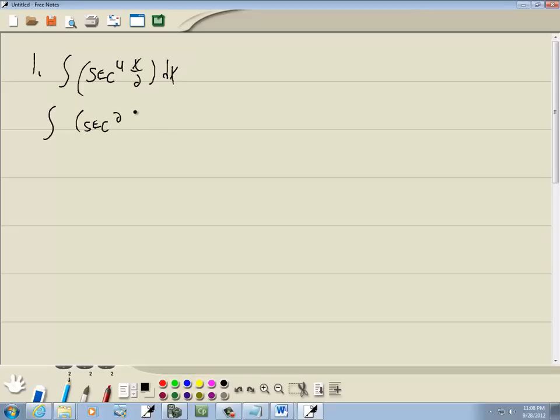So secant to the fourth of x over 2 is secant squared times secant squared, like that. Now this right here, I won't keep writing it, but this we're going to save. We're saving that for a derivative.